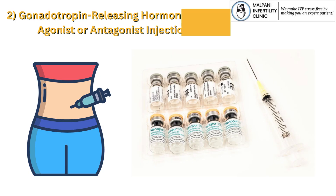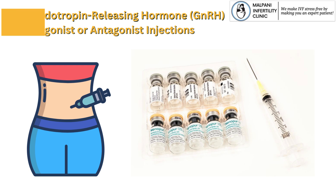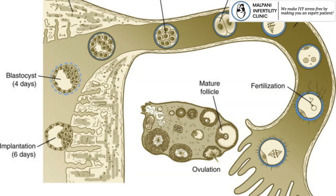Gonadotropin-releasing hormone (GnRH) agonist or antagonist injections: These medications help control the timing of ovulation to prevent premature ovulation. GnRH agonists or antagonists are used to prevent the release of eggs too early during the IVF cycle.